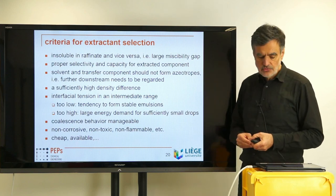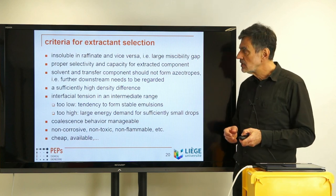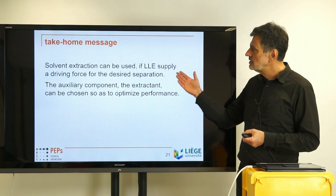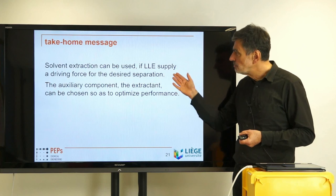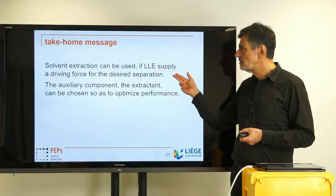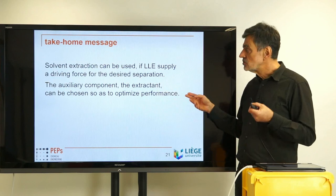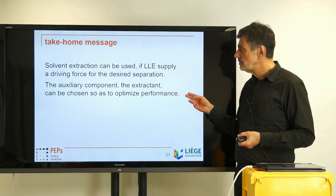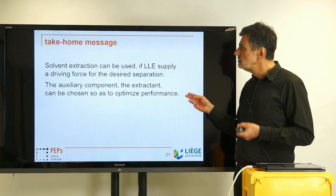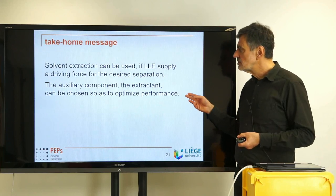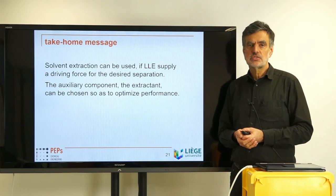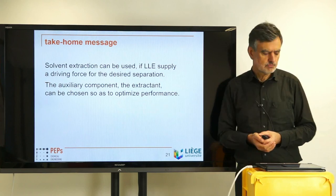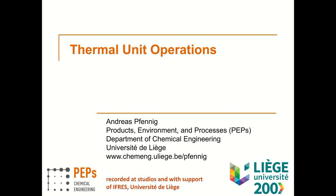So these are the criteria for solvent extraction, and with that I am more or less at the end of this introductory lecture. To summarize: solvent extraction can be used when the liquid-liquid equilibria supply sufficient driving force for the desired separation, and there is an advantage in adding the auxiliary extractant component in that it can be chosen to optimize the overall performance of the extraction process. Thank you, and I hope to see you again in the next video.